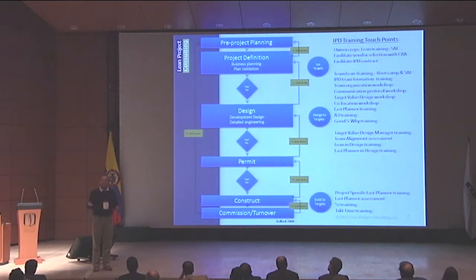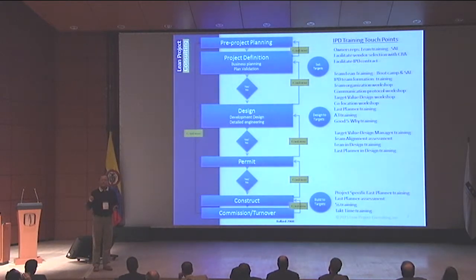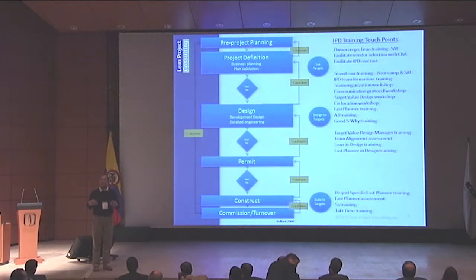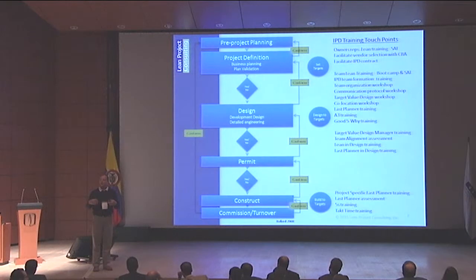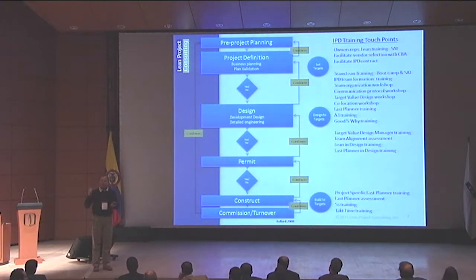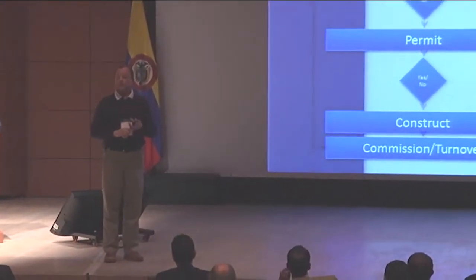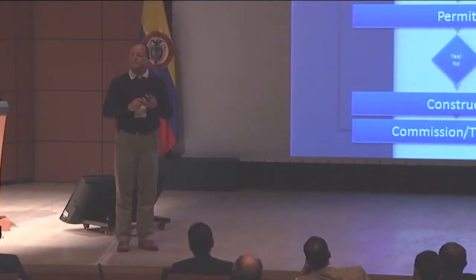Traditionally, what do we do? We have an organization that decides they want a capital project — a building that houses people, a building that houses labs — that does a function for that organization, and they decide they can spend a certain amount of money for it. This is very important: the allowable cost. This is the amount of money we're willing to pay for this thing based on a return on investment, based on business decisions.